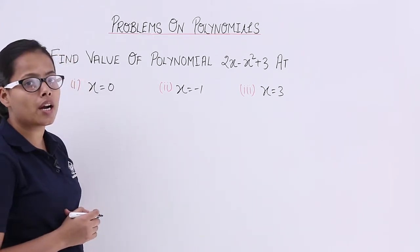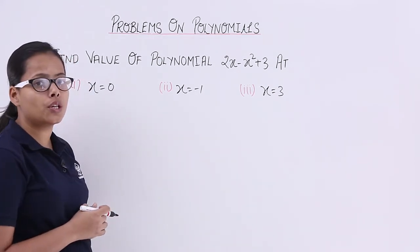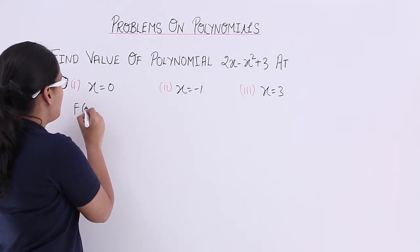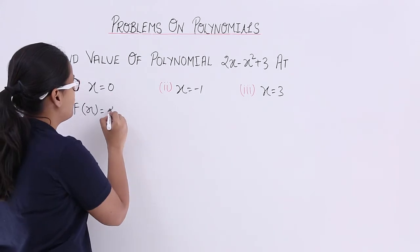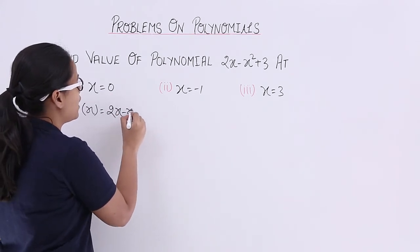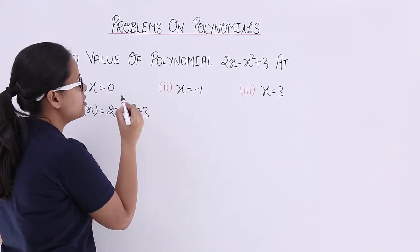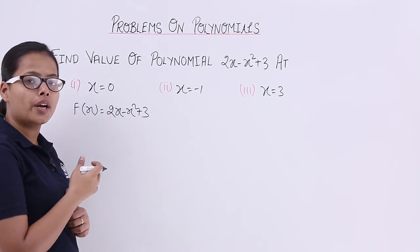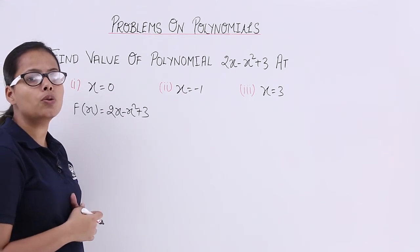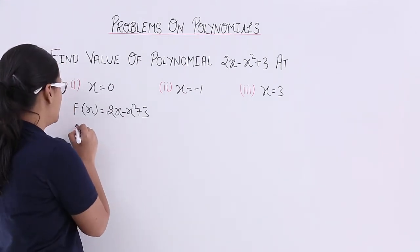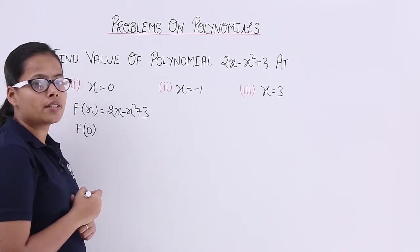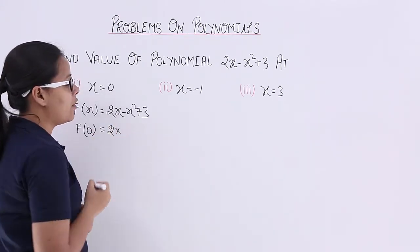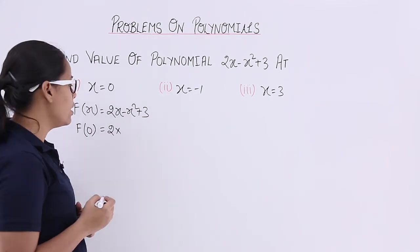What will be the value for this quadratic equation at x is equal to 0? Let's find out. f(x) is equal to 2x - x² + 3. Now to calculate the value at x = 0, you will put the value x = 0 in the left hand side as well as in the right hand side.